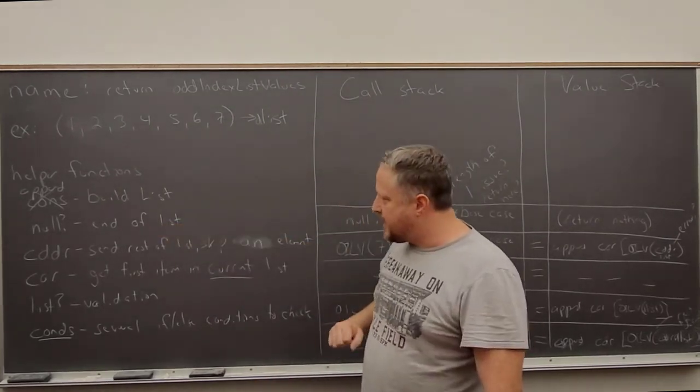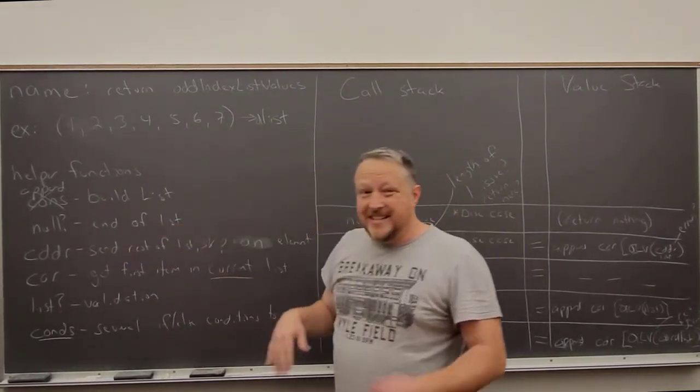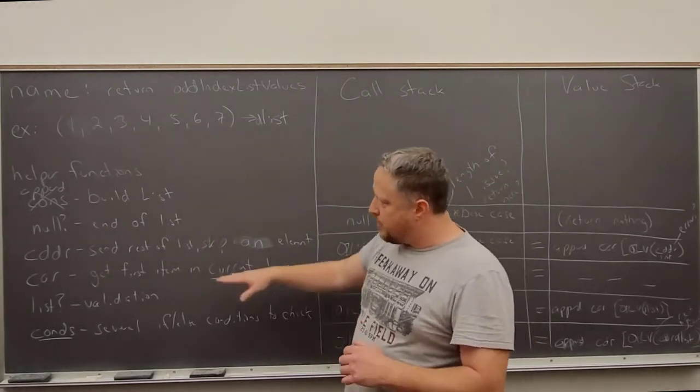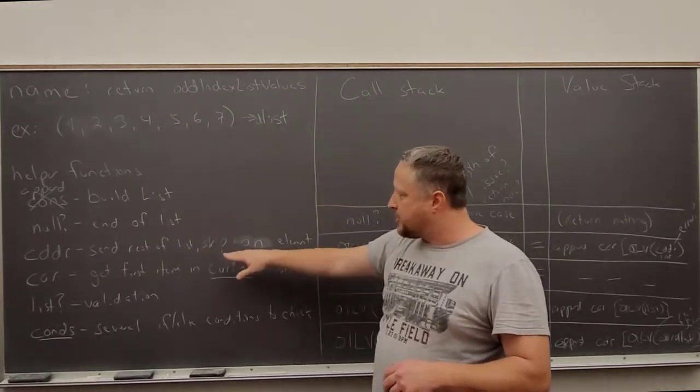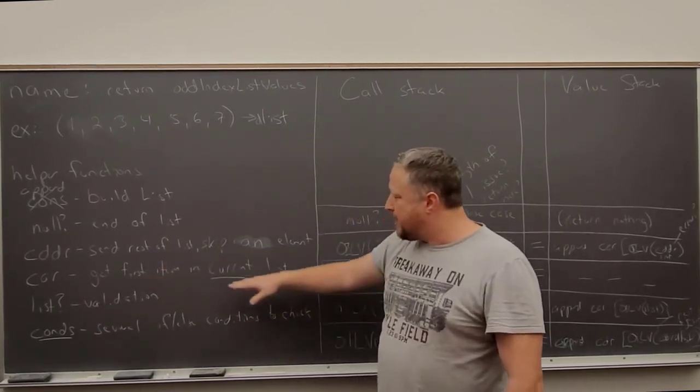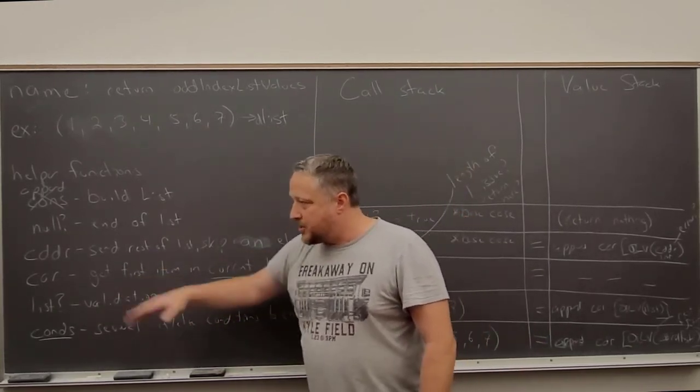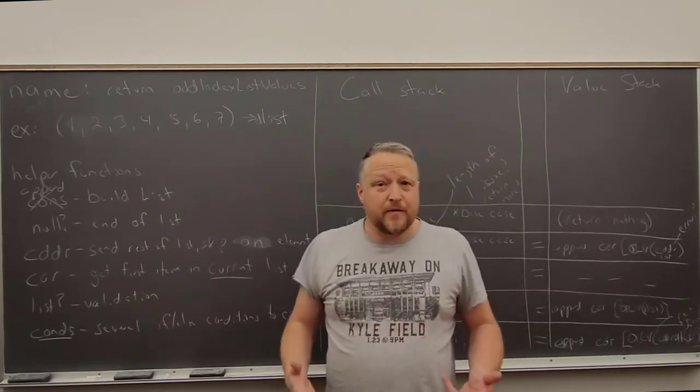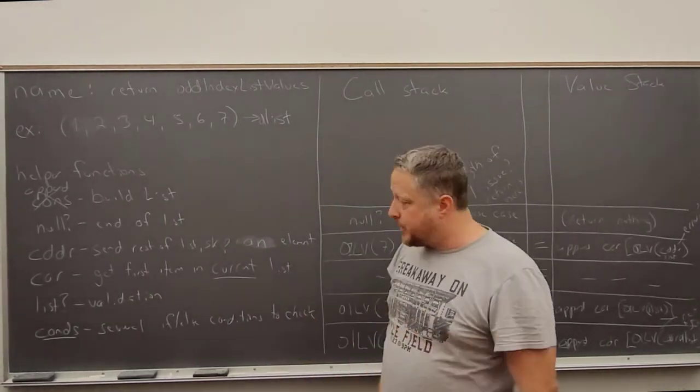Null, I'm going to check to see if it's the end of the list. CDDR, which is going to send the rest of the list, skip an element and send the rest of the list. Car is going to get our first item in the current list. List with a question mark is going to really be meant for validation to make sure it's actually passing in the list.